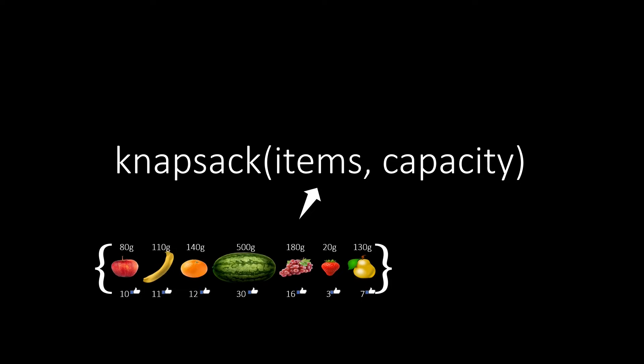In the knapsack problem, we want to compute a function with two parameters. The first parameter is a set of items, each with a value and a weight. The second parameter is a capacity. We're trying to find a subset of items such that the total weight is at most the capacity. We're looking for the subset with the maximum sum of values. What is the best subset of fruits if our capacity is 500 grams?